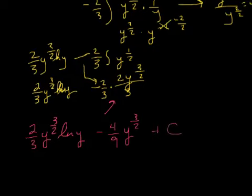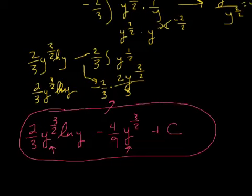Again, if you're trying to check your answers in the book, they may have factored out a two-thirds. They may have gotten a common denominator. They may have factored out the y to the three-halves. So just check your answers, see if they factored something out. But that's what you get.